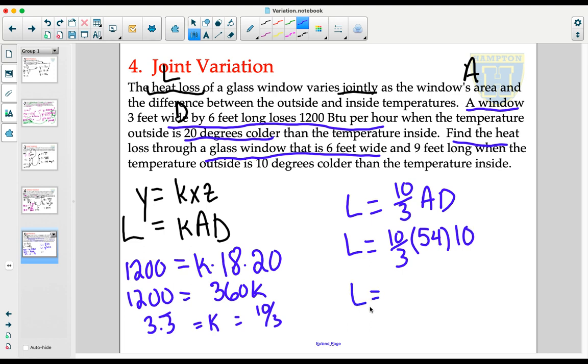Evaluating that entire right-hand side, three and one third times 54 times 10, we get that we lost 1800 BTUs, a measurement of heat loss or measurement of heat.